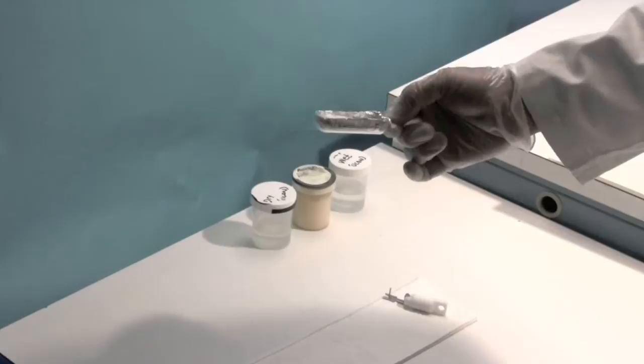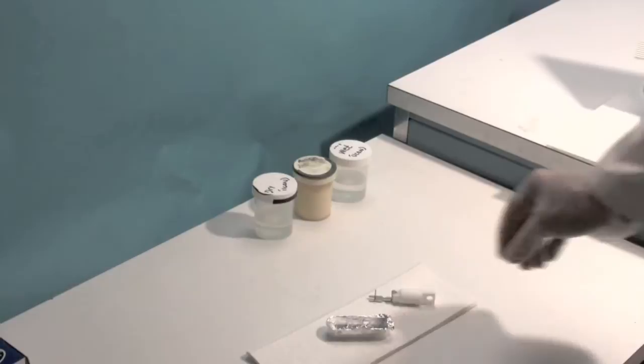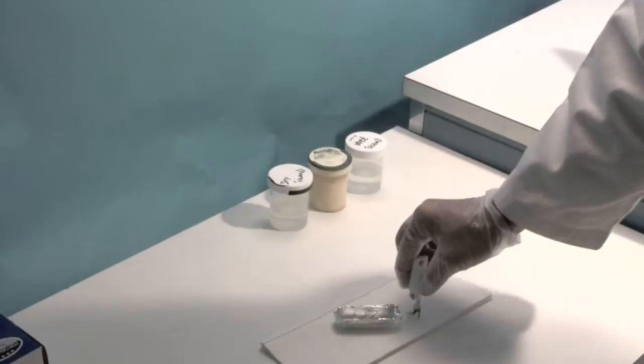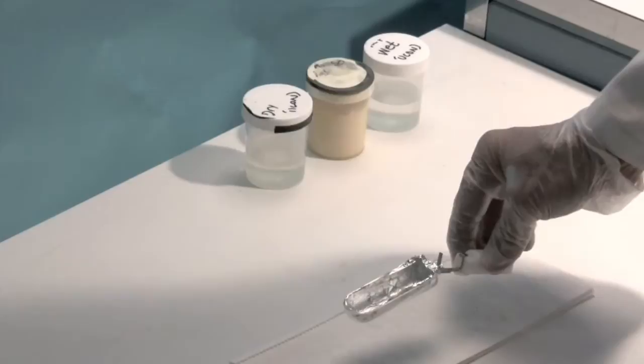So to start our test, we're going to weigh our glass boat with the aluminum foil, and we're going to tare it, and then we're going to get our sample, and then we're going to get the weight of our sample.